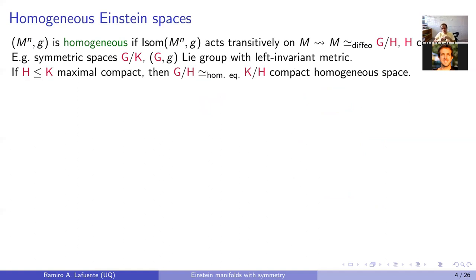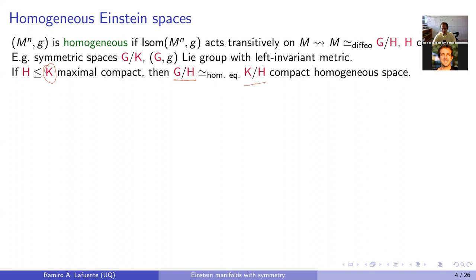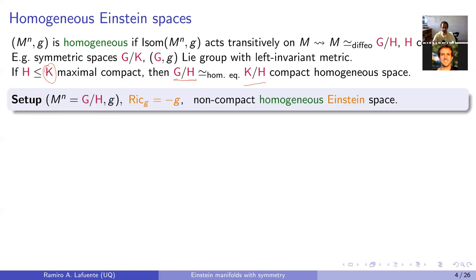A topological observation is that homogeneous spaces have topology concentrated in the compact part. Namely, one can always find a maximal compact subgroup K of G containing H, and G/H is homotopy equivalent to the compact homogeneous space K/H. So the topology is always contained in K, and it all boils down to understanding what happens on K/H.